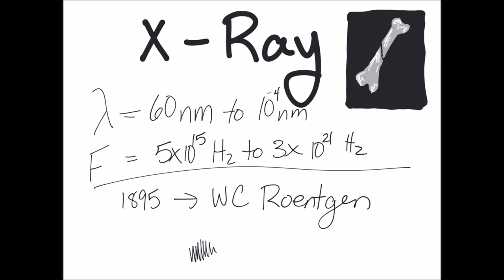X-rays have a wavelength between 60 nanometers and 10 to the negative fourth nanometers. They have a frequency between 5 x 10 to the 15th hertz and 3 x 10 to the 21st hertz. X-rays were discovered in 1895 by German physicist W.C. Roentgen which I may have pronounced incorrectly. He discovered that x-rays would pass through soft tissue but were stopped by bone and metal. By 1896 x-rays were used by doctors treating broken bones and gunshot wounds.